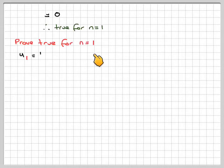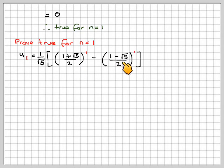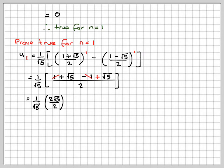We'll prove true for n equals 1, so u1 equals 1 over root 5 times (1 plus root 5) over 2 to the power of 1, minus (1 minus root 5) over 2 to the power of 1. Taking a common denominator, we get 1 plus root 5 minus 1 plus root 5, and the 1's cancel. So we get 1 over root 5 times 2 root 5 over 2; the root 5's and 2's cancel, leaving 1. Therefore true for n equals 1.